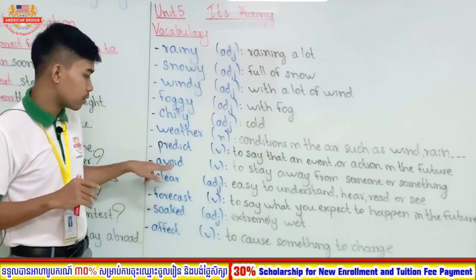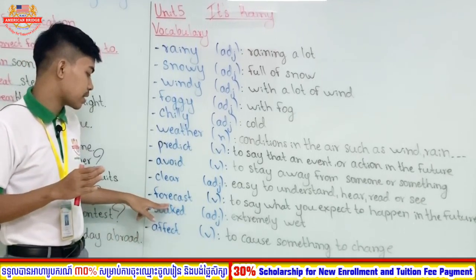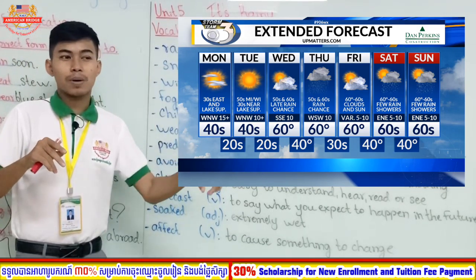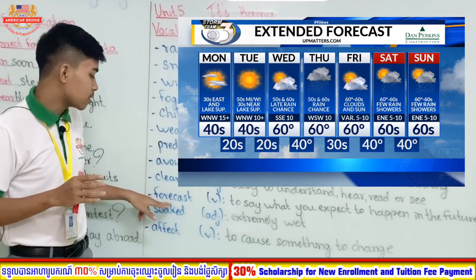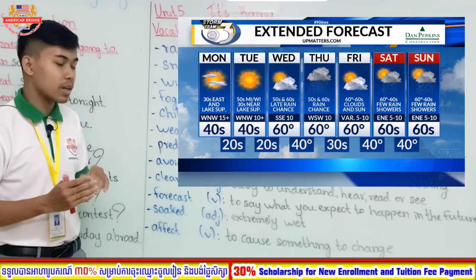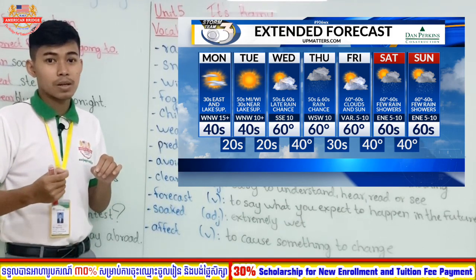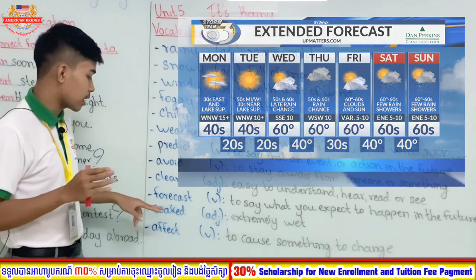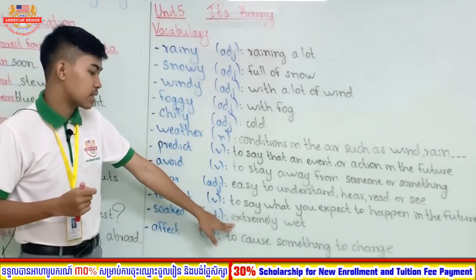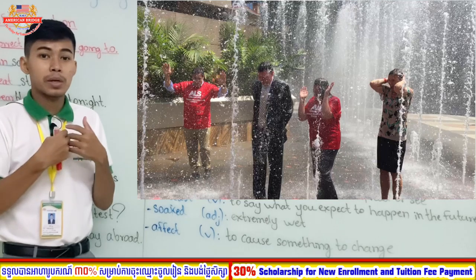The next word is 'forecast.' Forecast is very similar to 'predict' — it means to say what you expect to happen in the future. When you watch TV you always see the weather forecast, where they say today it is going to rain here, or tomorrow this province will have rain. The next word is 'soaked,' which is an adjective meaning extremely wet. For example, if you walk in the rain for an hour, you will be soaked — wet all over your body.